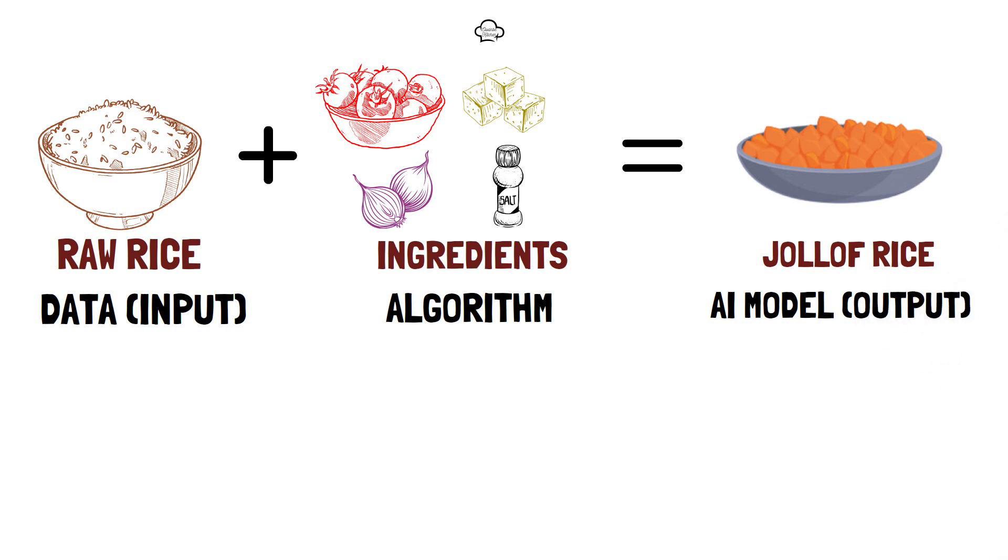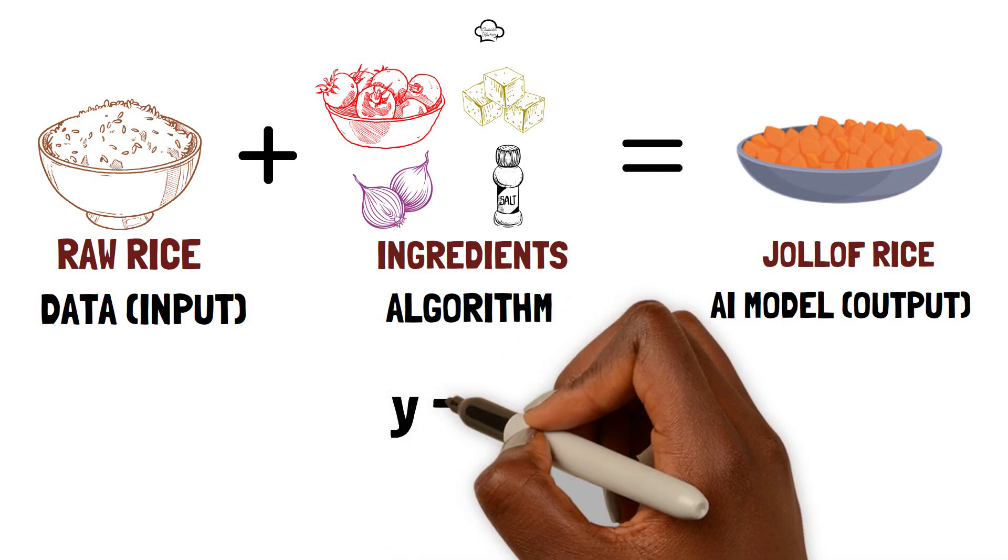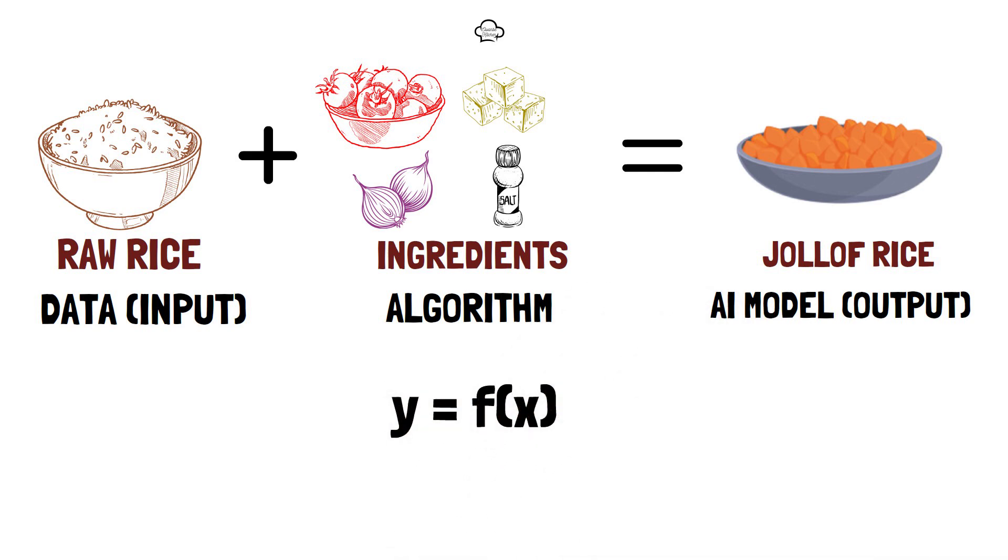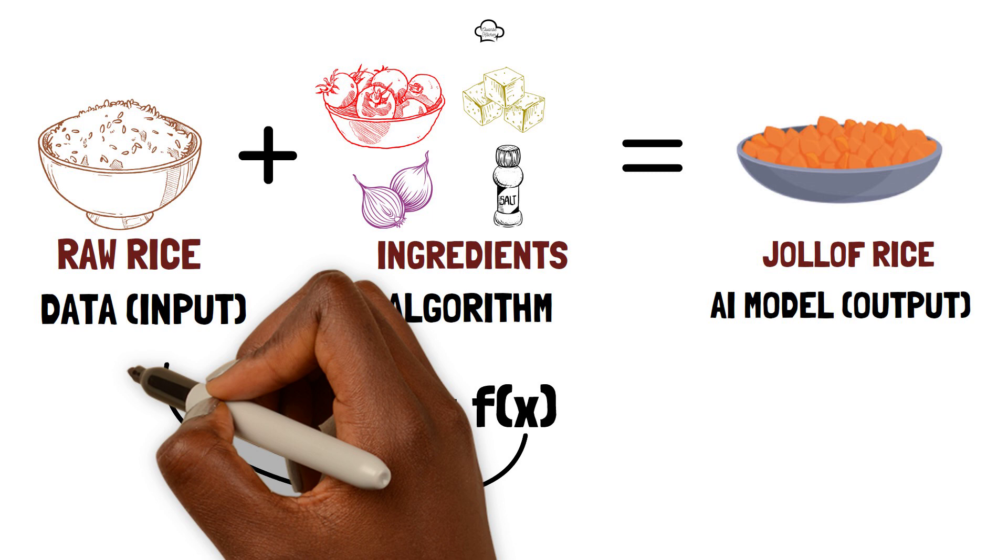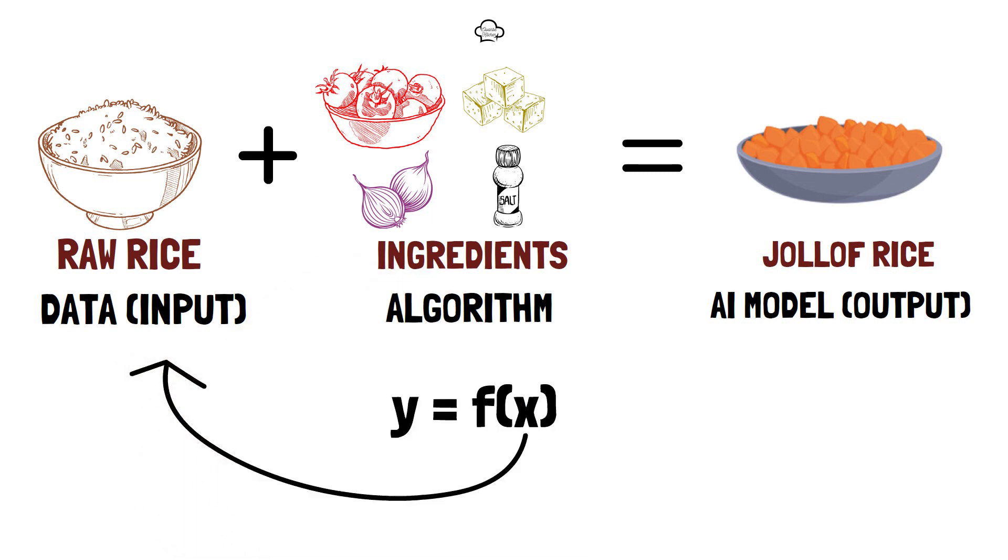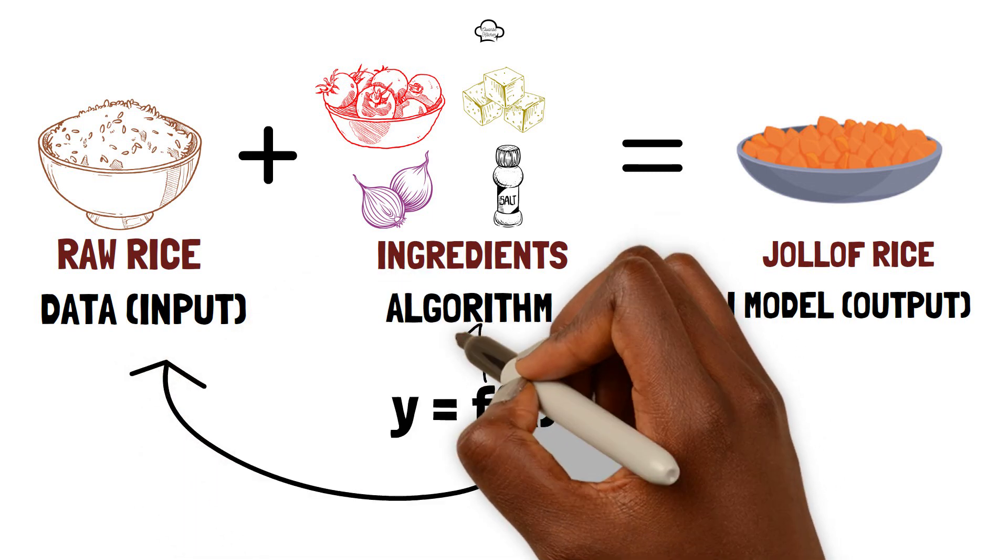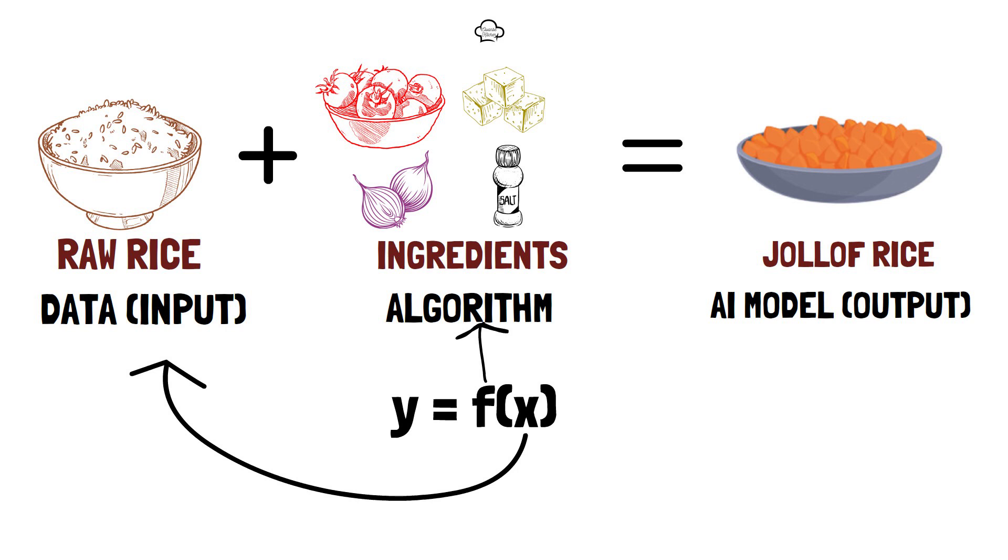A simplified equation for a model is Y equals to F of X, where X is our input, our data, or raw rice. F is the function, our algorithm or ingredients and Y represents our AI model or output, our Jollof rice.